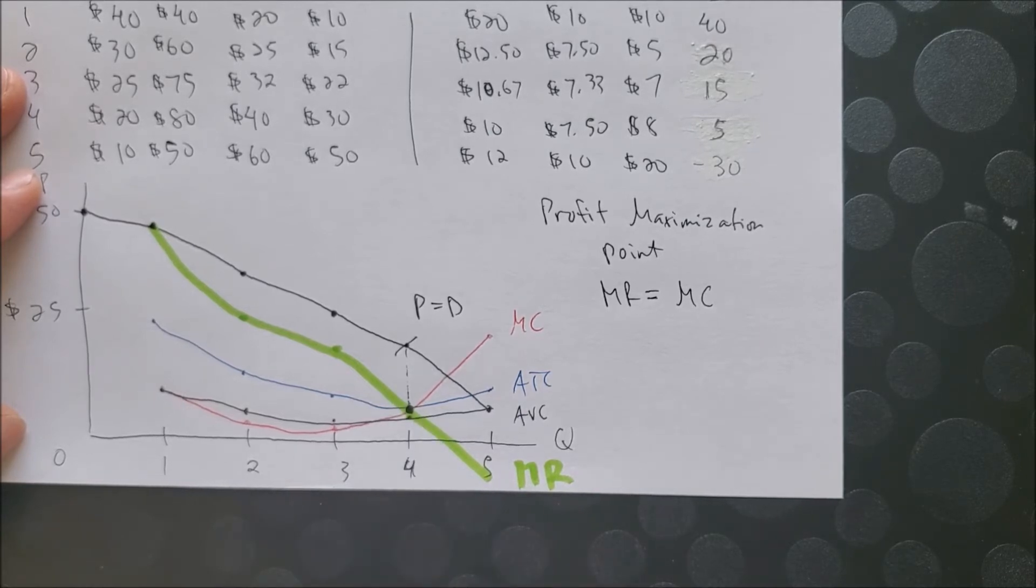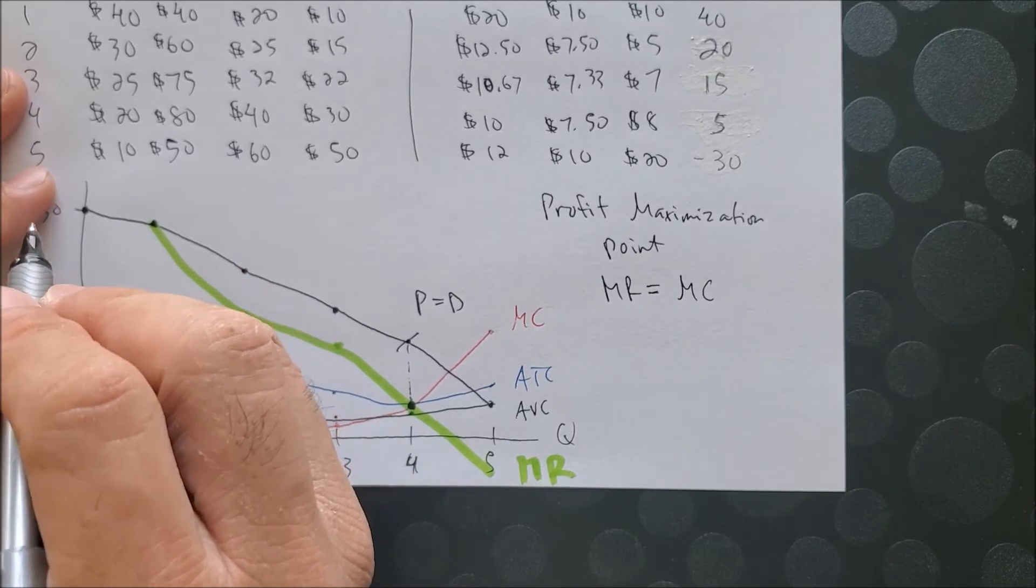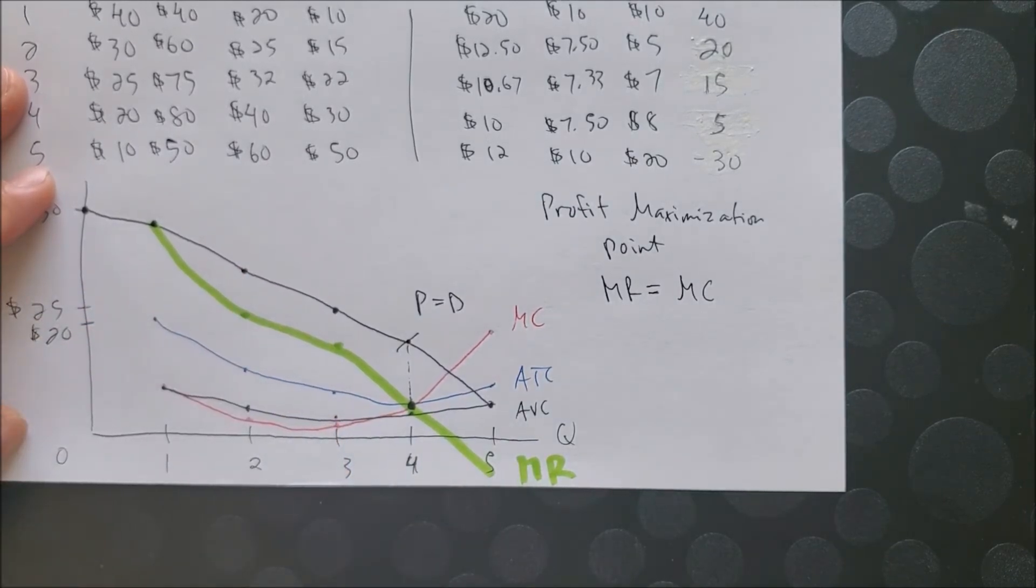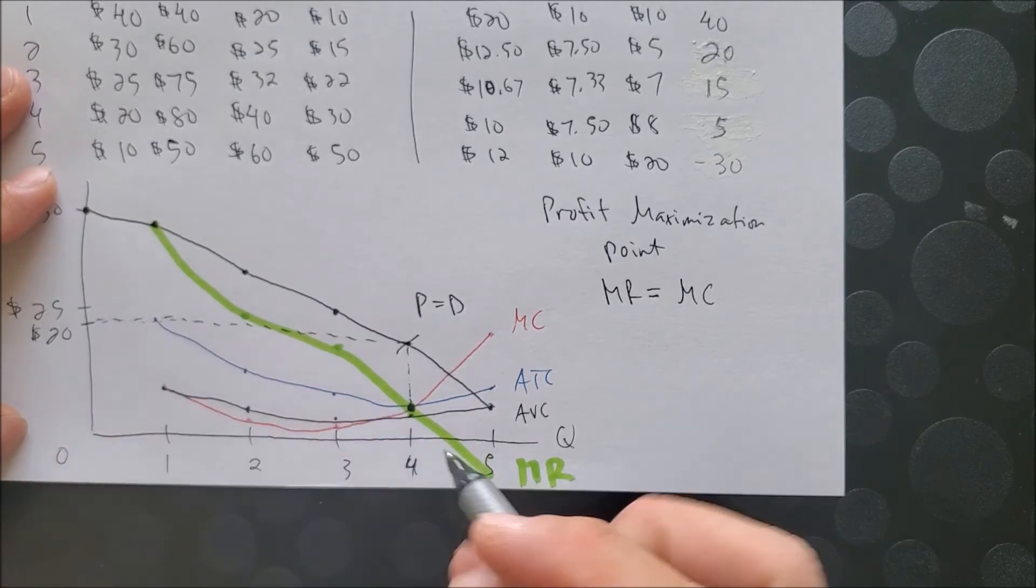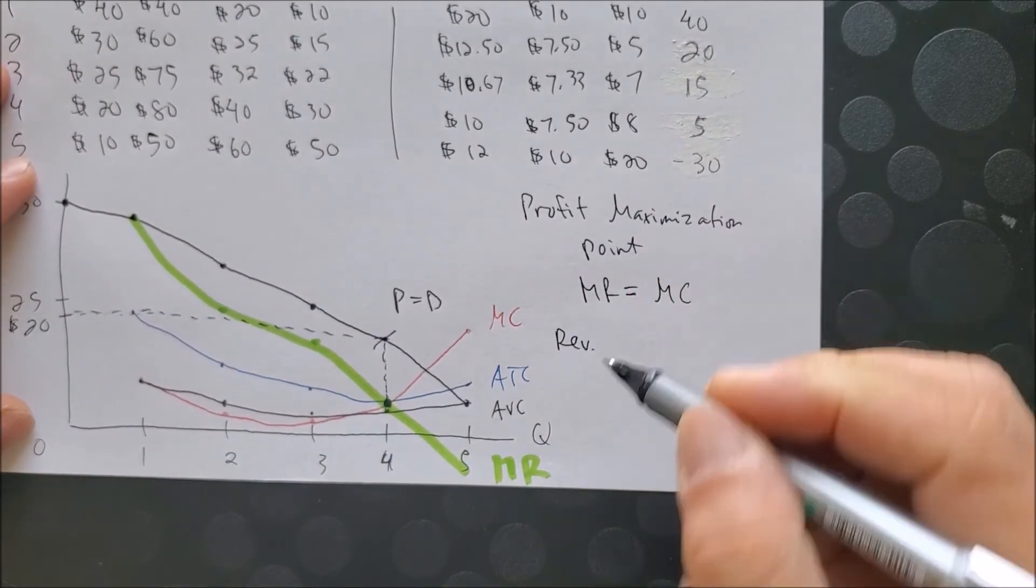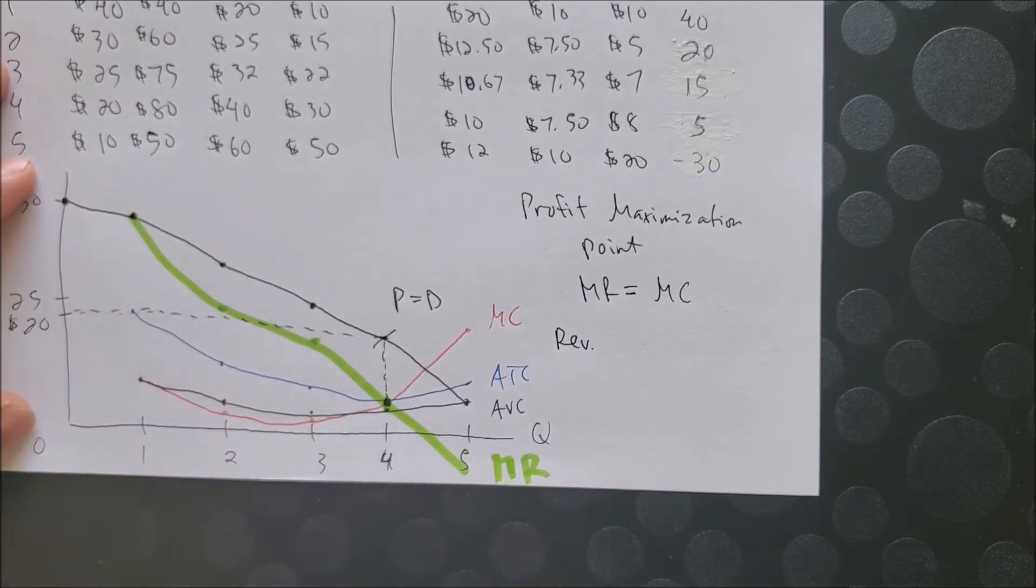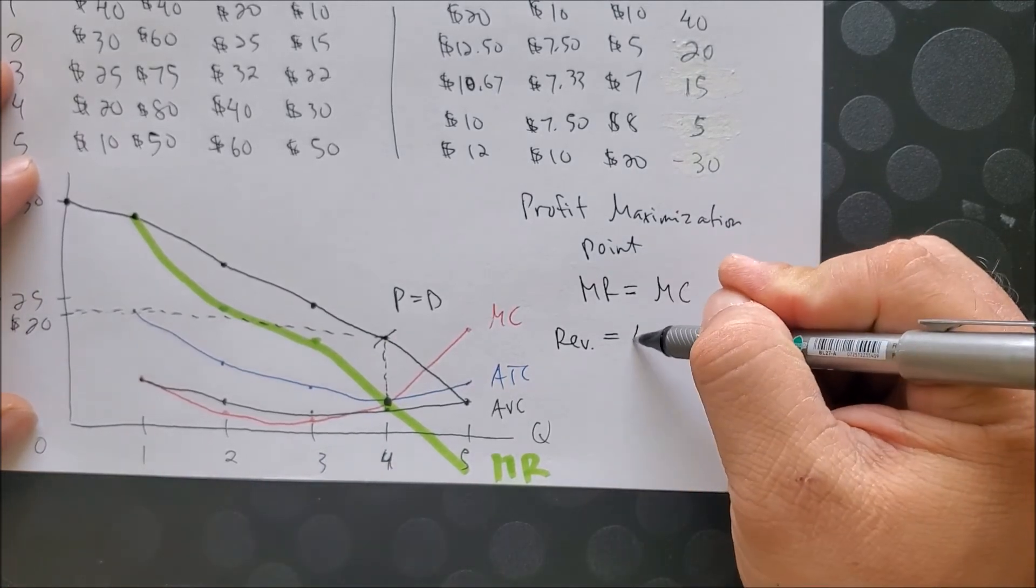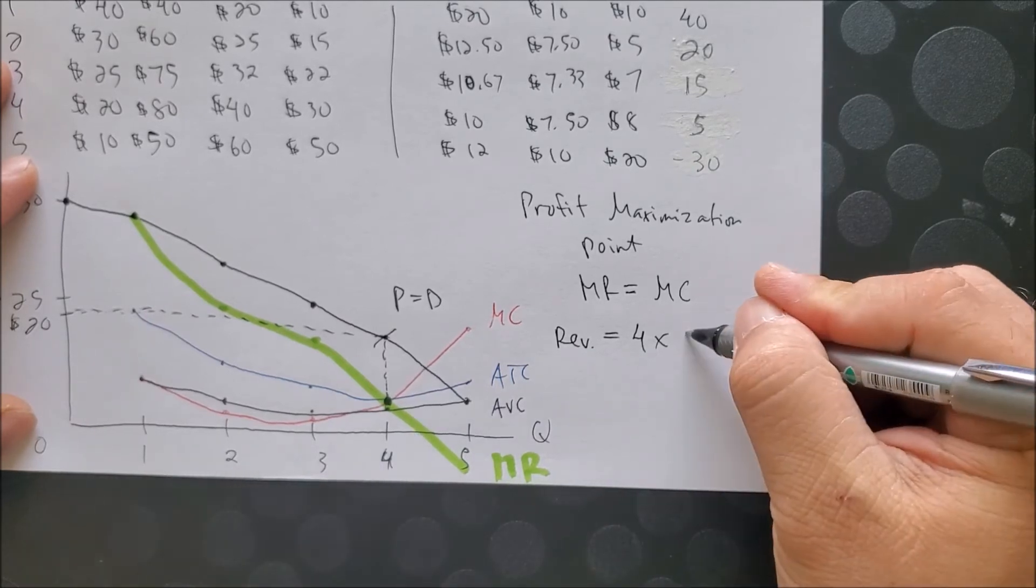So in the case of this monopolist, it looks to be that they are going to set price at the following point. They are going to set price what looks to be at $20. So now we can see, as we did in the previous example, we can now draw this rectangular shape. And this is going to represent the revenue of the monopolist. The revenue length is 4 times a width of 20, width of 20 to give us this rectangular shape gives us 80.